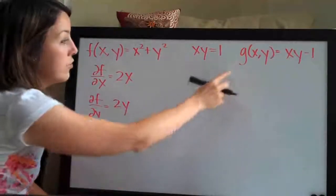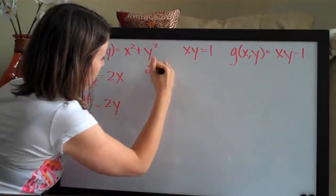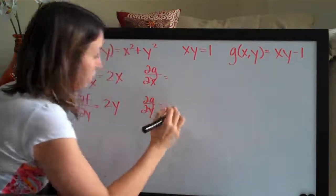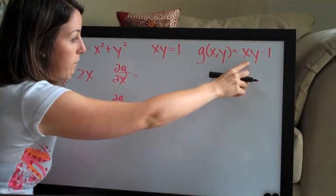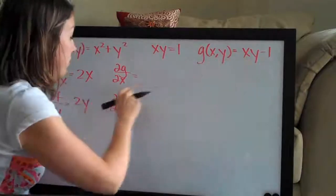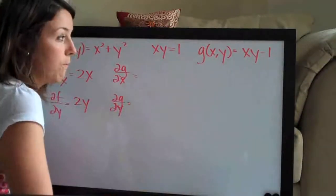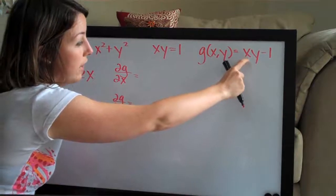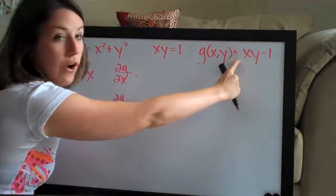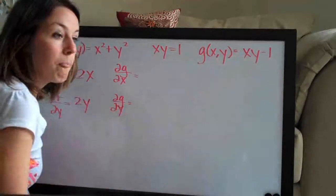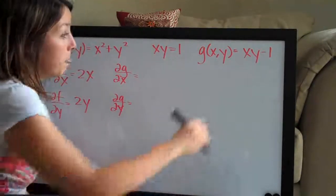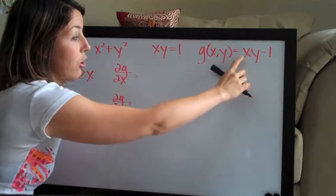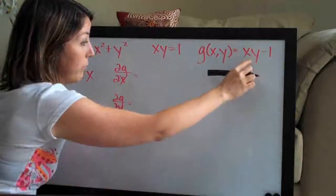Now we do the exact same thing with g of xy — partial derivative of g with respect to x and with respect to y. With respect to x of xy minus 1, we treat y as a constant, so pretend y is the number 2. Then xy becomes 2x, and the derivative of 2x is just 2. Since y is actually representing that constant, y acts like a coefficient on x, so the derivative with respect to x is just y.